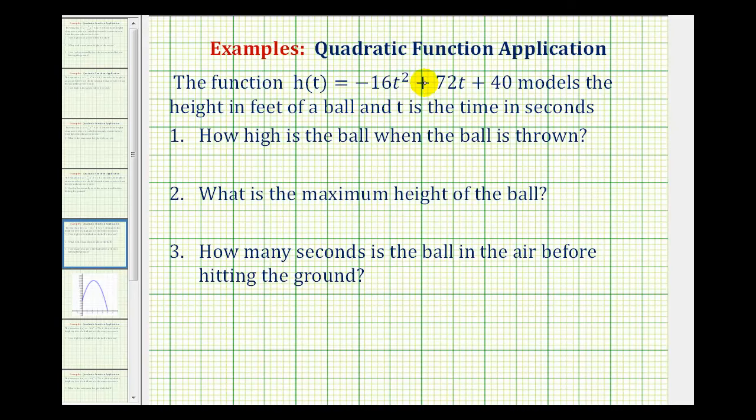The function h(t) = -16t² + 72t + 40 models the height in feet of a ball, and t is time in seconds. We want to answer the following questions. Number one, how high is the ball when the ball is thrown? Number two, what is the maximum height of the ball? And number three, how many seconds is the ball in the air before hitting the ground?